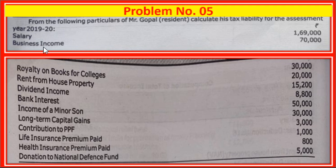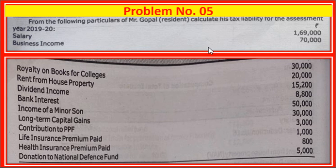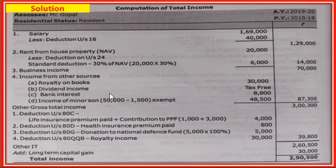Computation of total income and tax liability. Name of assessee: Mr. Gopal. Residency status: resident. Assessment year: 2019-20. Previous year: 2018-19. First, income from salary: gross salary 1,69,000. Less deduction under section 16(2), standard deduction: 40,000. So 1,69,000 minus 40,000 equals 1,29,000.